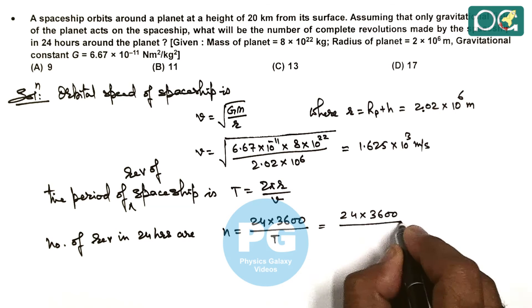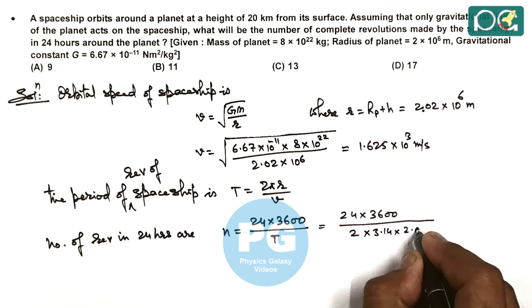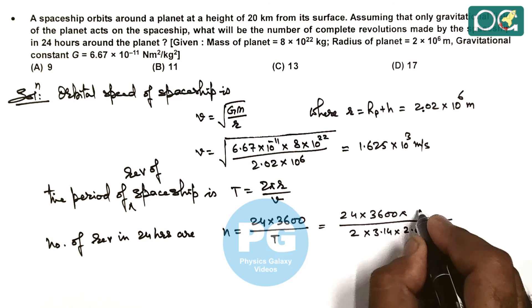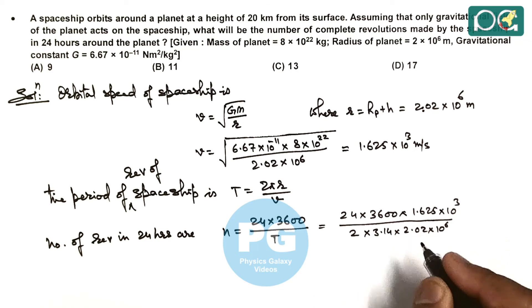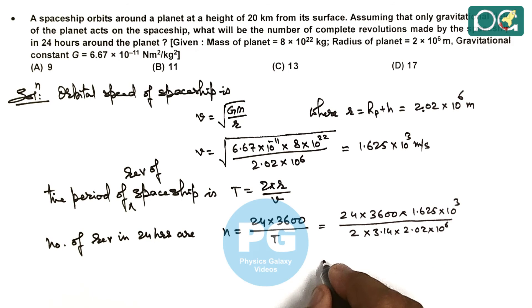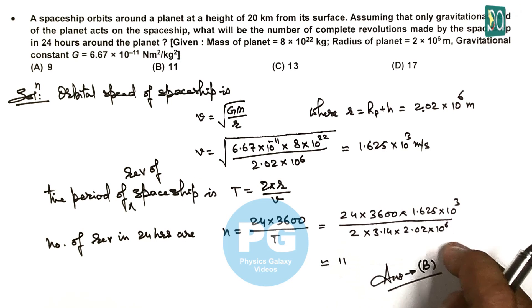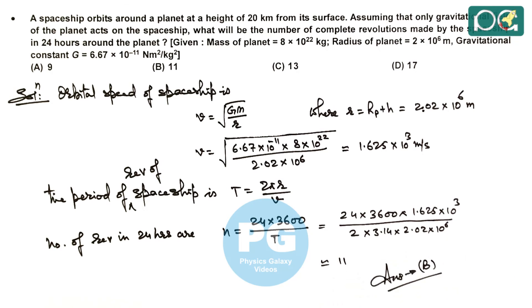Substituting these values and simplifying numerically, this gives approximately 11, which matches with option B in the question. We can quickly evaluate and verify that the values come approximately equal to 11.